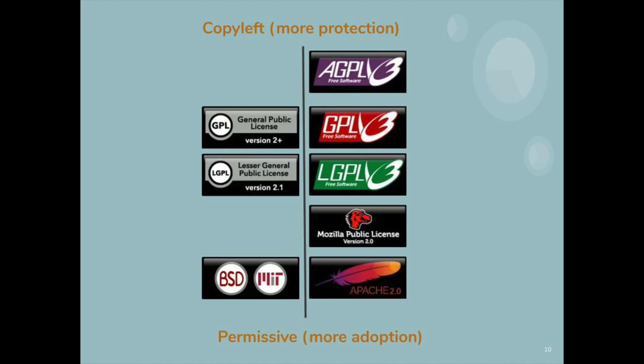AGPL is the strongest open-source license that you can currently choose. If AGPL will not meet your needs, then an open-source license won't work for you. But copyleft licenses also have their costs. Lots of companies are reluctant to adopt software under copyleft licenses, and particularly AGPL. So if you choose AGPL, you get the most effect of forestalling competition, but you may also significantly limit adoption. Please make sure to consider how you expect people to use your software. If your software is a whole program, then GPL might work pretty well for you. But if your software is a library, GPL or AGPL might not make sense because people couldn't redistribute the software without violating your license. So those are the copyleft licenses you have to choose from.